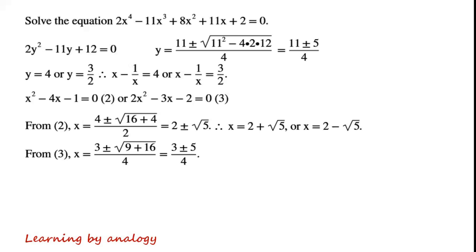From equation 3, x equals (3 plus or minus the square root of 9 plus 16) over 4, which simplifies to (3 plus or minus 5) over 4. So x equals 2 or x equals minus one half.